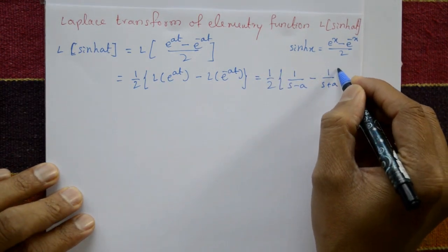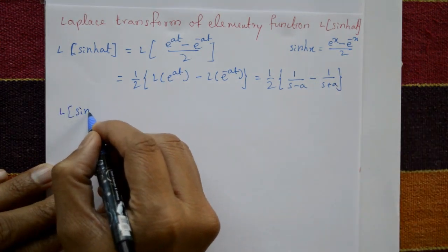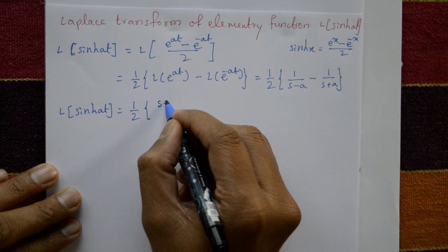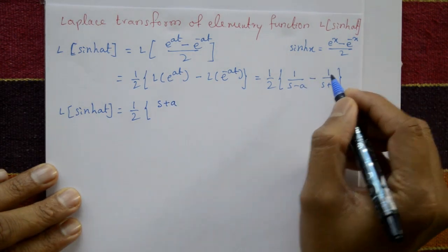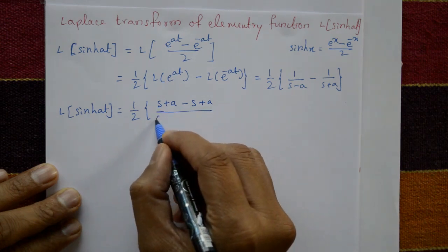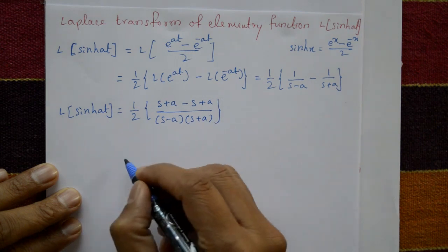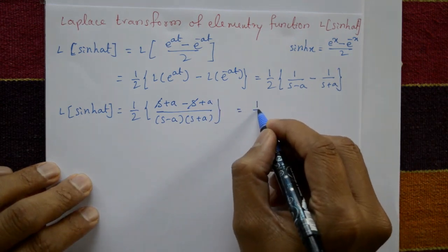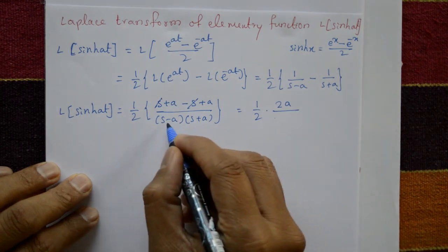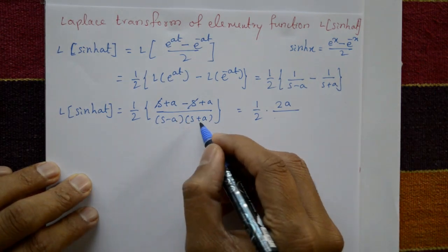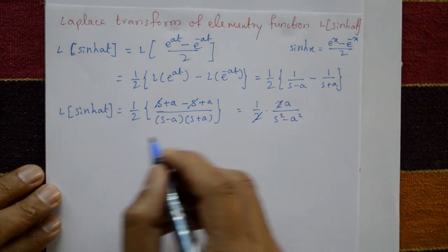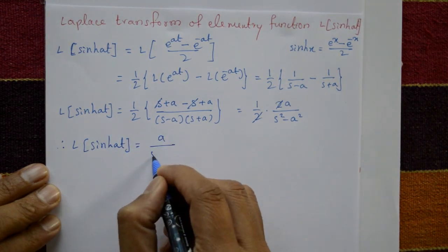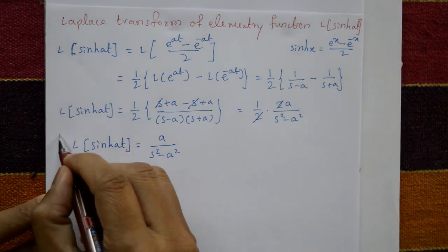By cross multiplication: (1/2) times [(s+a) - (s-a)] / [(s-a)(s+a)]. The s terms cancel, leaving (1/2) times 2a / (s² - a²). The 2s cancel, giving the final result: Laplace of sinh(at) = a / (s² - a²). This is the standard formula for the Laplace transform of sinh(at).